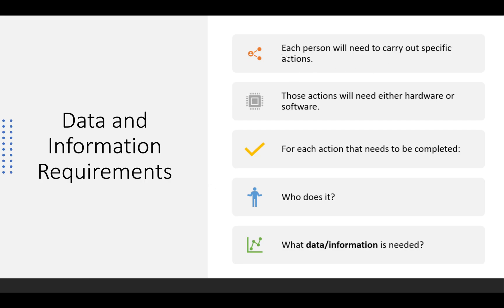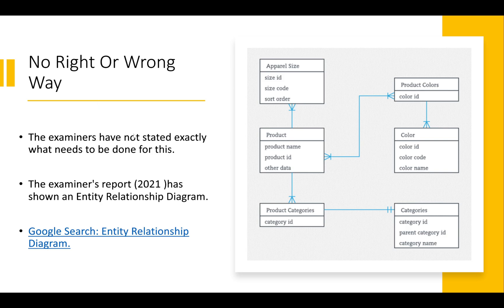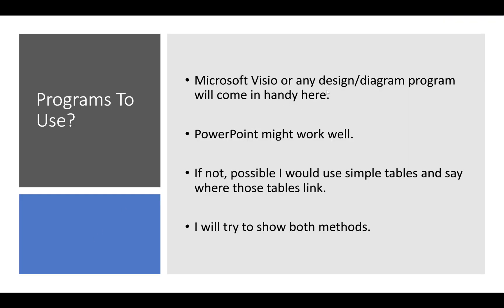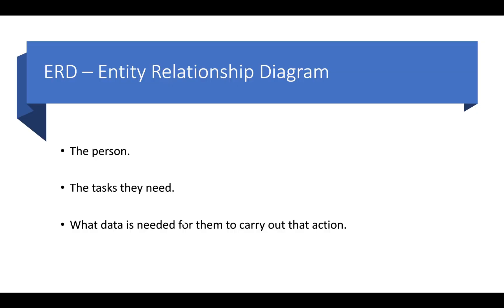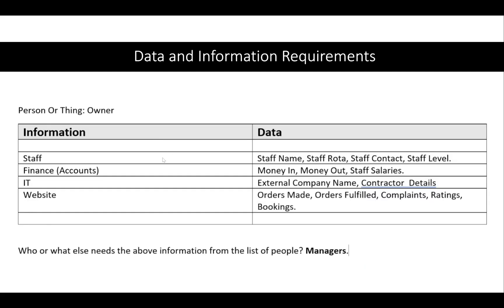For data and information requirements: each person will need to carry out specific actions, and those actions will need hardware and/or software. For each action, identify who does it and what data or information is needed. The examiners haven't stated exactly what needs to be done, but the 2021 examiner's report showed an entity relationship diagram linking information to the data it contains.